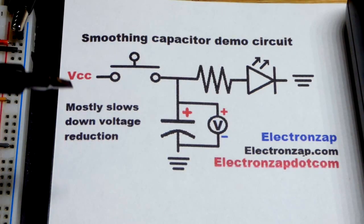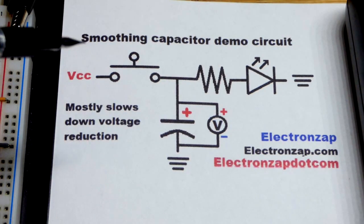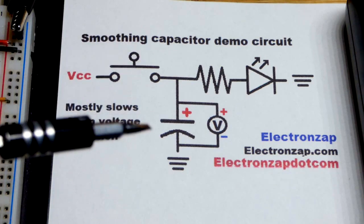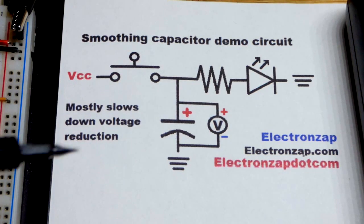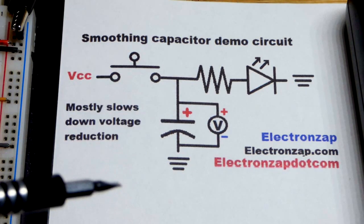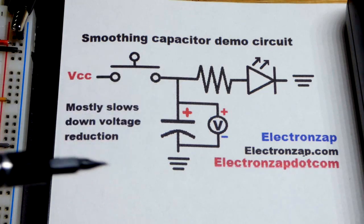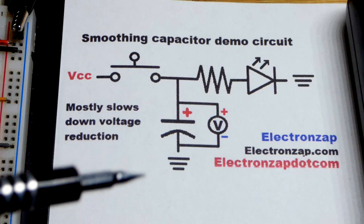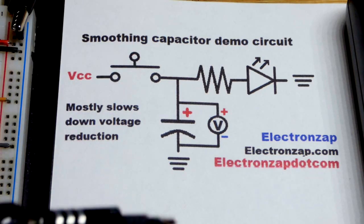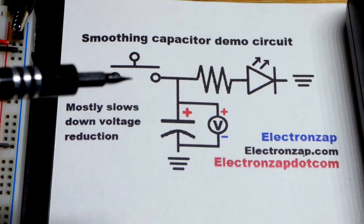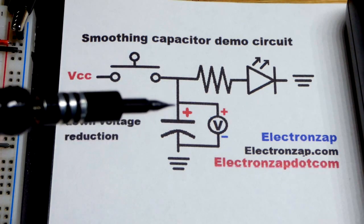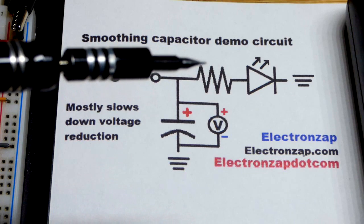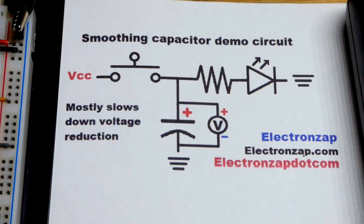In this video we're going to do a demonstration circuit of a capacitor that is going to smooth a voltage. It's really only going to smooth it for the reduction in voltage. It's going to slow down how fast the voltage drops when we release the switch, and if we just briefly release and then repress the switch, the capacitor will hold the voltage pretty steadily across the load.